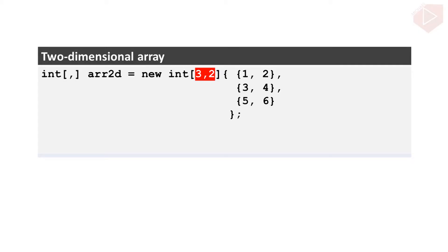This number inside the brackets defines the number of rows and columns. The first rank, which is 3, denotes the number of rows, and the second rank, which is 2, defines the number of columns.